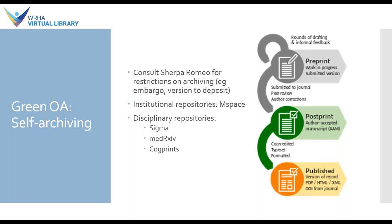For the green open access or self-archiving option, there's a tool called Sherpa Romeo which details the archiving restrictions for each particular publisher. For example, a journal hosted by Springer may have different requirements than one from Elsevier. In terms of article versions: the pre-print is the version you submit before peer review or copy editing; the post-print — also called the author accepted manuscript — is the version after peer review corrections. Most journals are okay with you submitting a pre-print to an archive; they may or may not allow the post-print, and there may be an embargo requirement. For the published version of record, there are often restrictions on where you can share it.